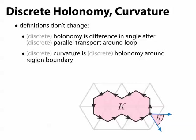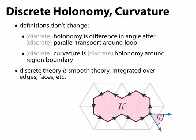If we remove the word discrete here, we just get back our original smooth definitions. That's because the discrete theory we're describing really is the smooth theory, except that we've integrated it over the dual edges and dual faces of our mesh.